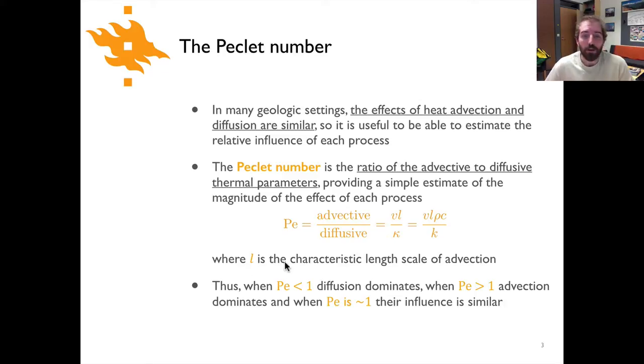Now that l is a characteristic length scale, so that is something related to how thick of a region is being moved as a result of advection. If it's something that affects the whole crust, that l could be 35 kilometers. If it's a single thrust sheet or something like that, it could be one kilometer. So l makes a big difference obviously and it depends on what's being advected.